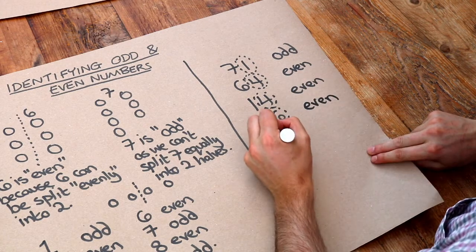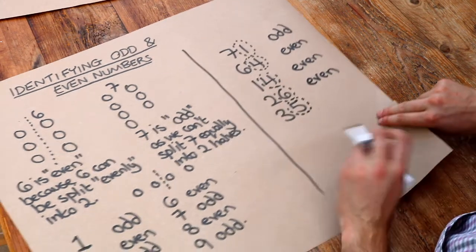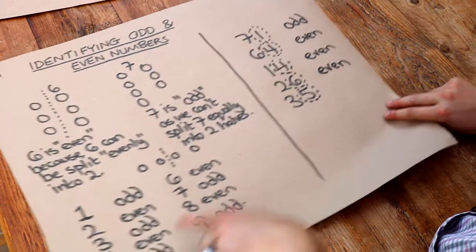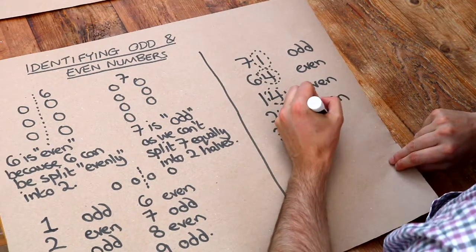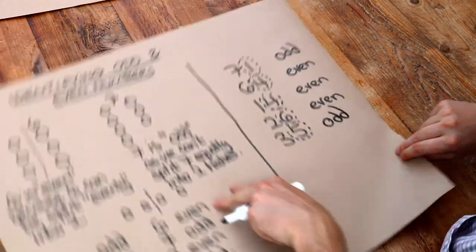And finally, the 5 in 35. Well 5 is odd. And therefore 35 is odd. And that is it.